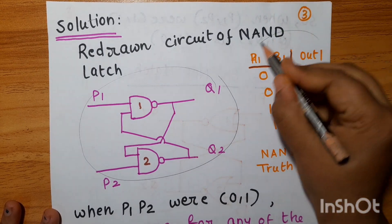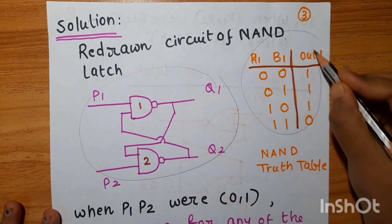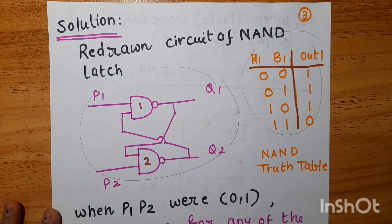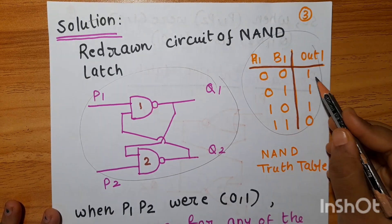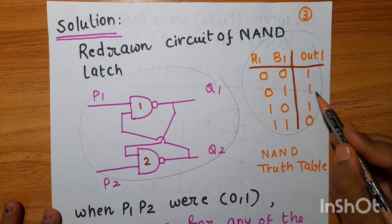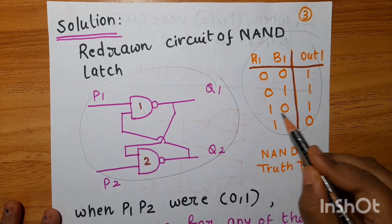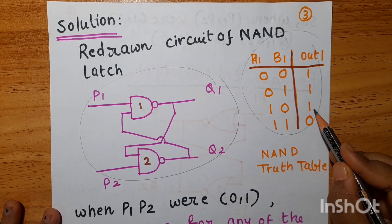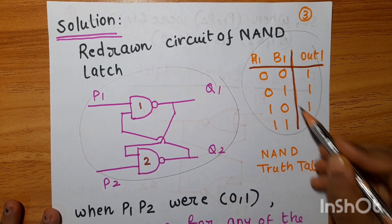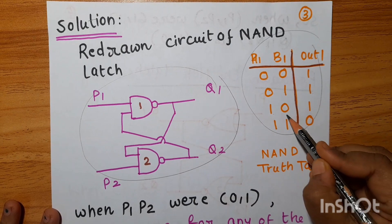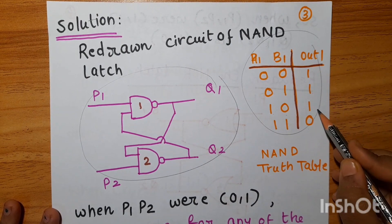Here is the truth table of the NAND gate: inputs 0,0 → output 1; inputs 1,0 → output 1; inputs 1,1,0 → output 1; inputs 1,1,1,0 → output 1. Any input that is 0 gives output 1.